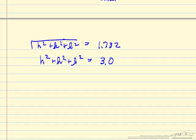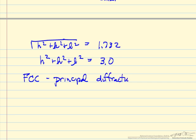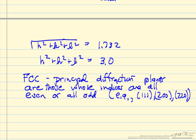We need to use additional information about face-centered cubic structure. The principal diffraction planes are those whose indices are all even or all odd. So that means (111), (200), (220) - all odd or all even. Those are the only ones that show up as the main peaks.